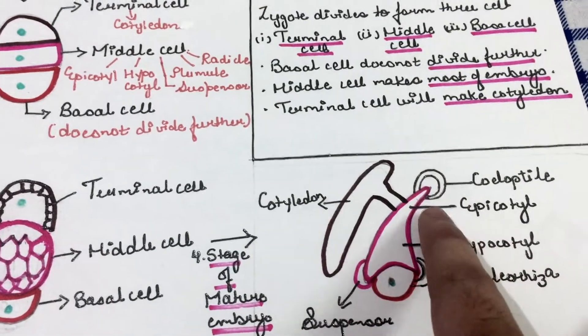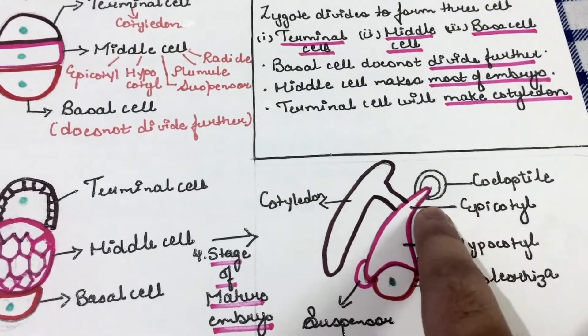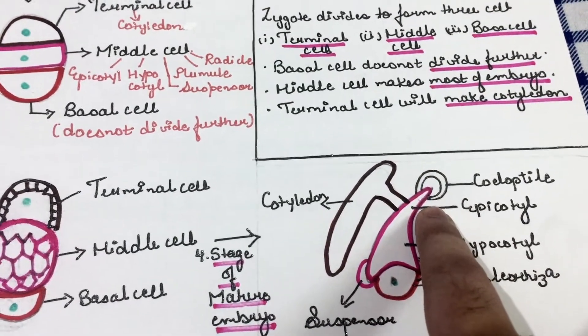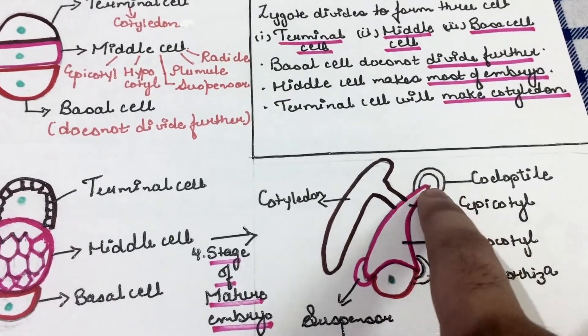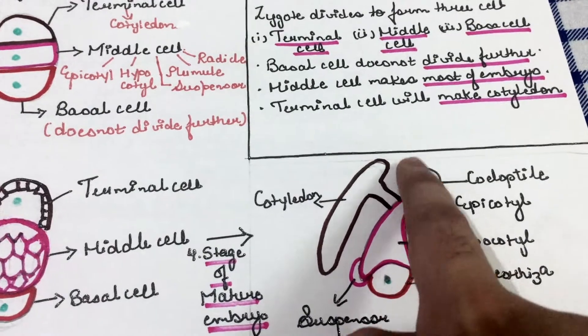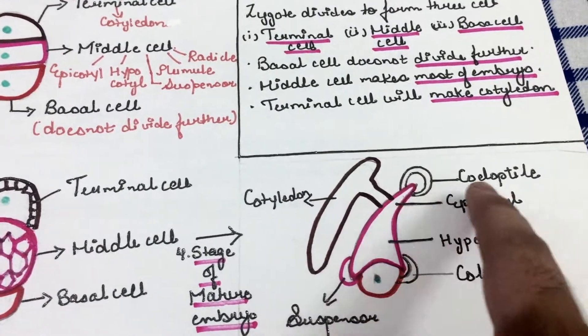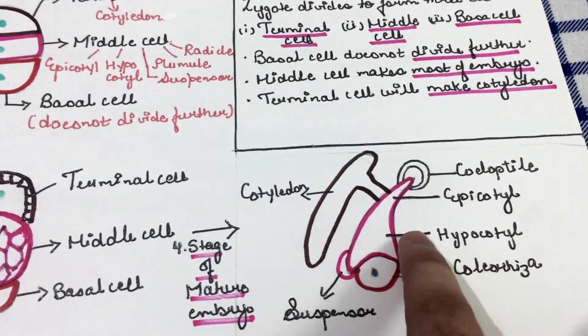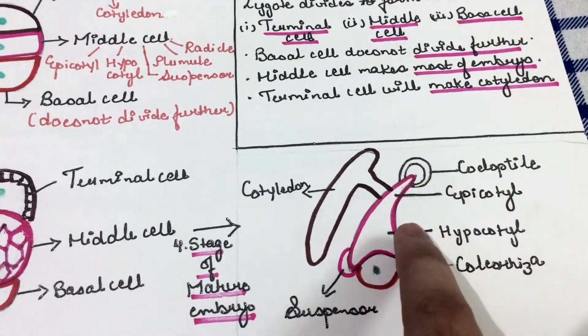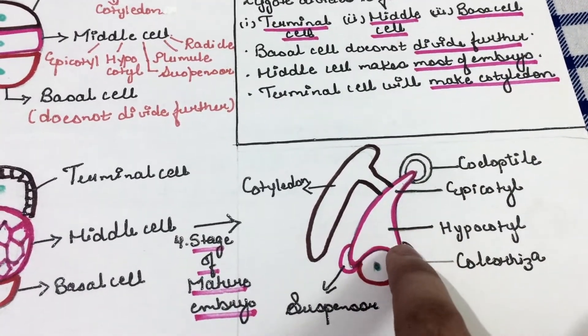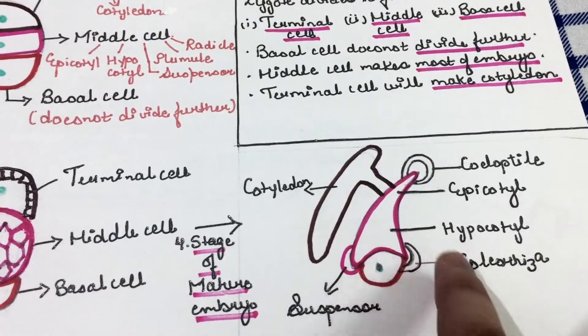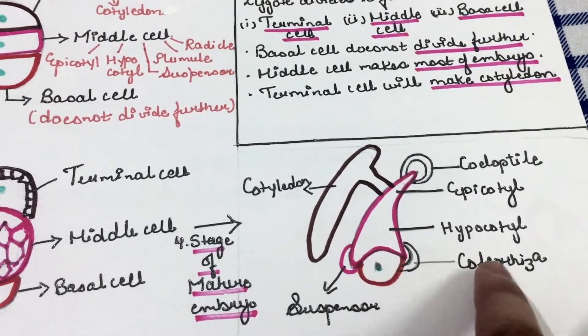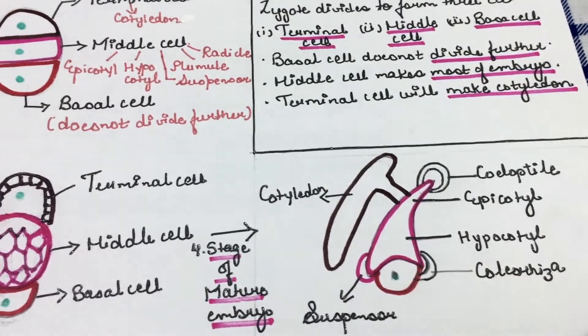The epicotyl, which ends in the plumule, has a covering called the coleoptile, and the hypocotyl, which ends in the radicle, has a covering called the coleorhiza.